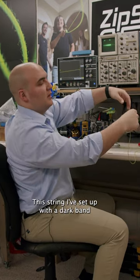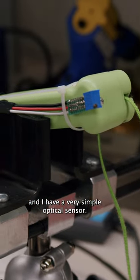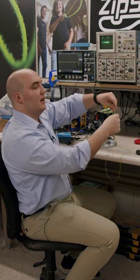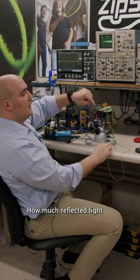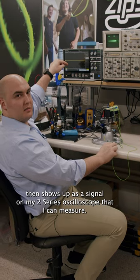This string I've set up with a dark band and I have a very simple optical sensor. This optical sensor is going to shoot light at the string and see how much light reflects off of it. How much reflected light then shows up as a signal on my 2-Series oscilloscope that I can measure.